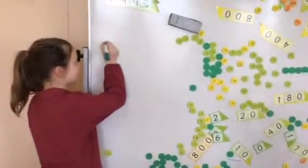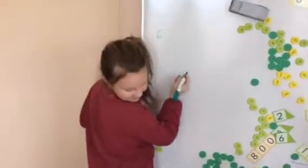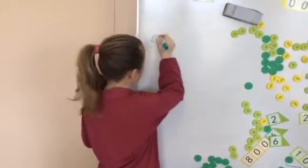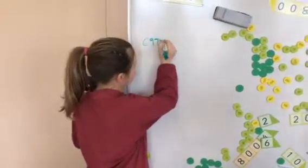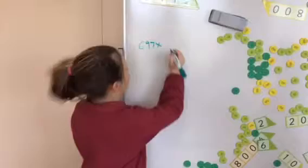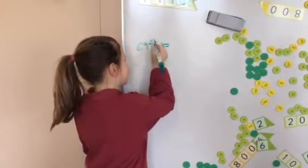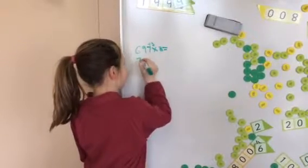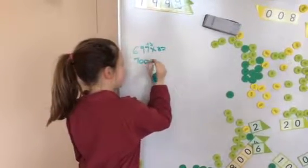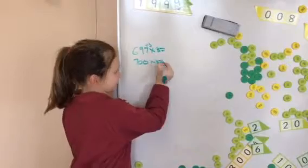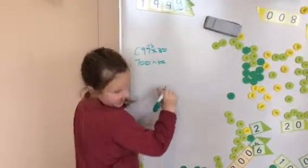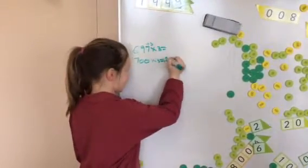So the question is 697 times 3. Okay, so what you do is you go plus 3, so 700 times 3 equals 2,100.